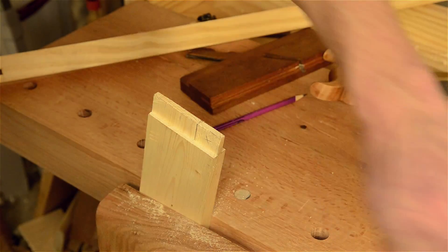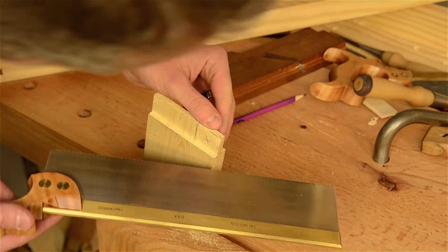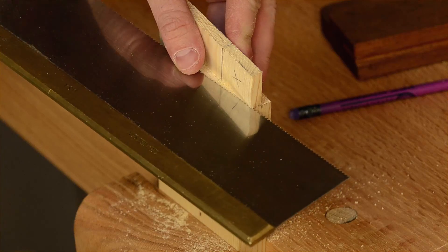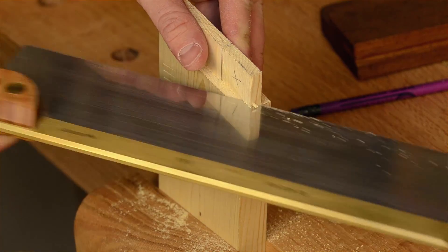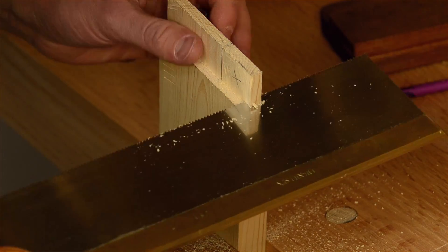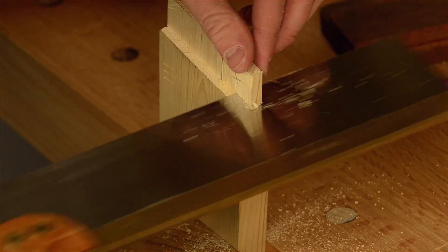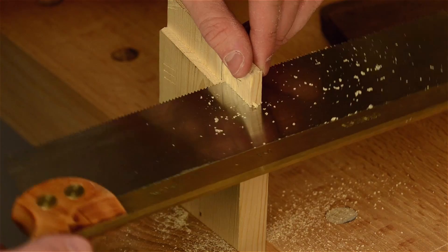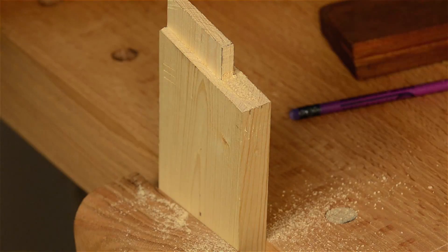Then you can use a crosscut saw to come in here. If you want you can rest it on the shoulder. And then trim that off. That little piece.